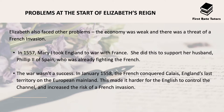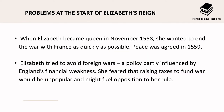There were also lots of problems at the start of her reign. She faced a very weak economy and a threat of French invasion. In 1557 Queen Mary I took England to war with France to support her husband Philip II of Spain. The war wasn't a success, and in January 1558 the French conquered Calais, England's last territory on the European mainland, which increased the risk of French invasion. When Elizabeth I became Queen in November 1558 she wanted to end the war with France as quickly as possible, and peace was agreed in 1559. She tried to avoid foreign wars, partly due to England's financial weakness, fearing that raising taxes would be unpopular and might fuel opposition to her rule.